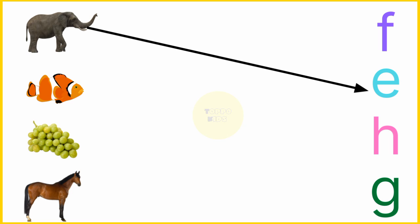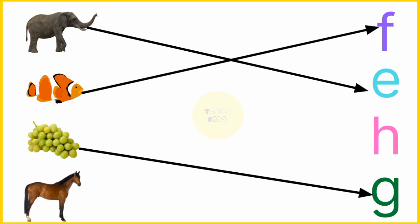E. E for elephant. F. F for fish. G. G for grapes. H. H for horse.